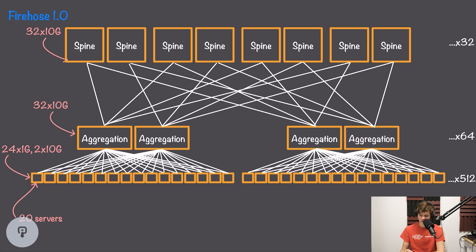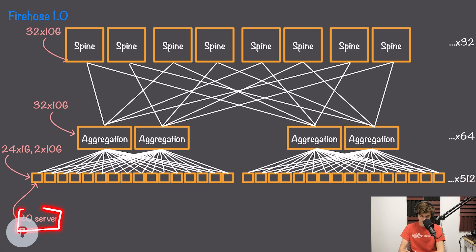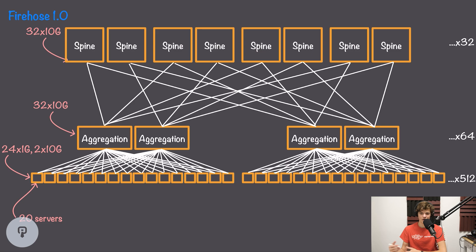The final result of this topology is 32 spine switches, 64 aggregation switches, and 512 top-of-rack switches, supporting 20 servers per rack each with an average bandwidth of one gigabit per second. Notably, servers have one gigabit per second both within the same rack and to servers in other racks, even at peak bandwidth usage across the entire cluster.